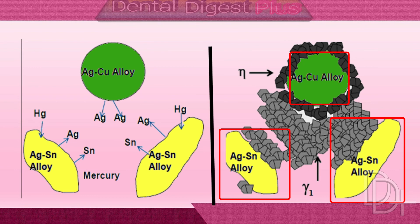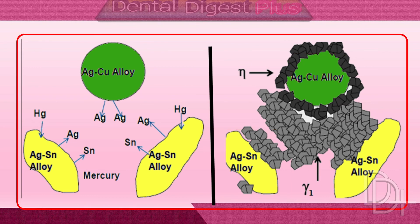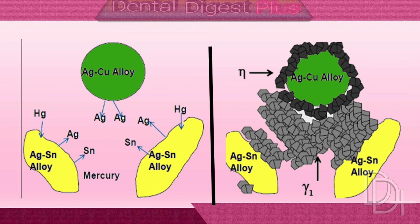Note that the gamma-2 phase has been eliminated in this reaction. The gamma-2 phase actually forms at the same time as the eta phase, but is later replaced by it. Some set admixed amalgams do contain gamma-2 phase, although the percentage is less than that in low-copper amalgams.